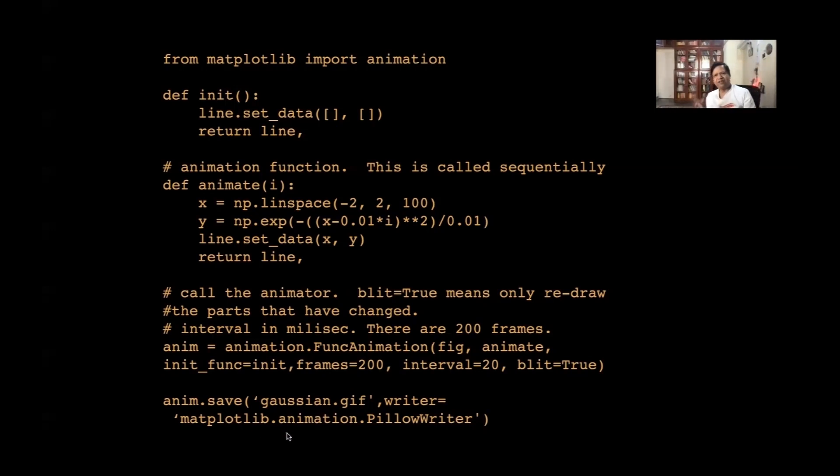But when you run a movie, then it will be encoded using this writer. Okay. It is called in kilo writer. There are some more writers available. But this is the writer we use. Okay.